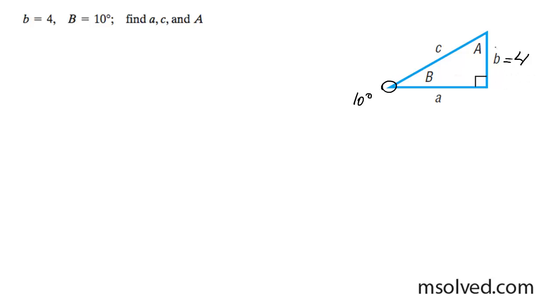So I do know from this that big A is going to be 80 degrees because it's 180 minus 90 minus 10, 180 degrees for a complete triangle.